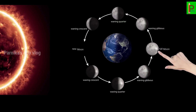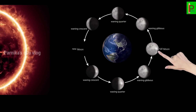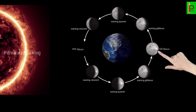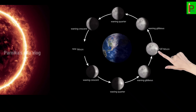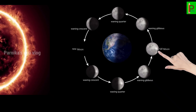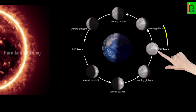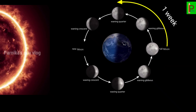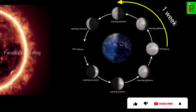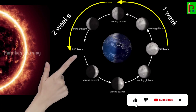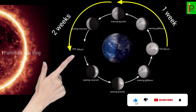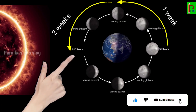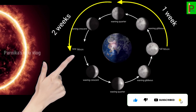After the full moon night, the lighted surface we can see goes on reducing. In one week we can see only half of the Moon, and in two weeks comes the new moon night again.